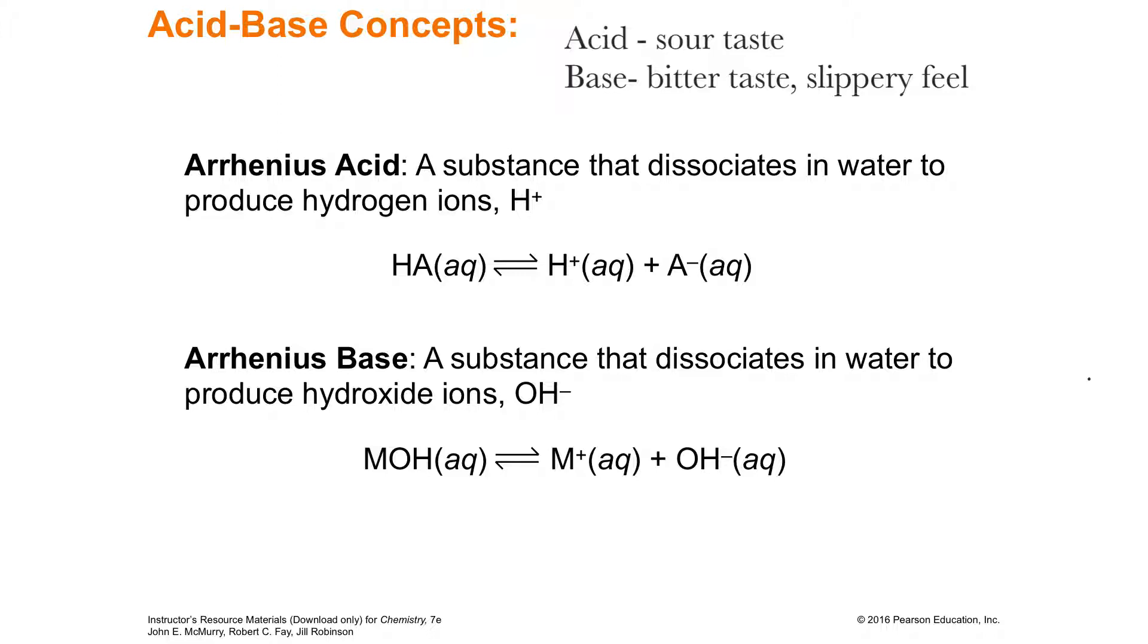This fellow was making observations that every time that you had a hydrogen ion, which happens to be a proton, but it's a hydrogen ion, there's no electrons in a hydrogen ion, that those hydrogen ions were always present whenever you had an acid. So an Arrhenius acid is anything that when you put it in water and it breaks apart, it breaks apart into protons, or breaks apart into hydrogen ions.